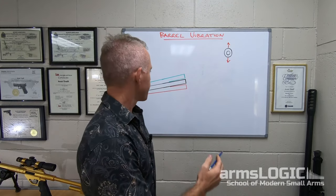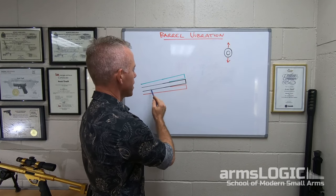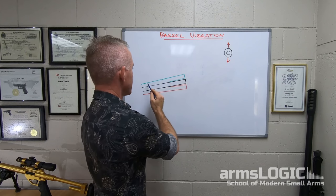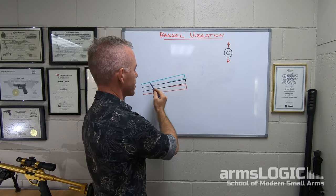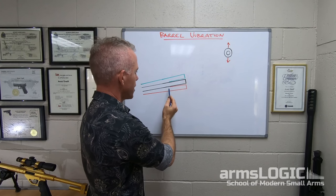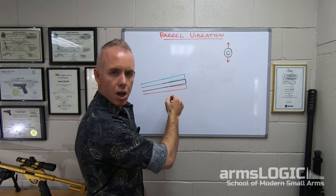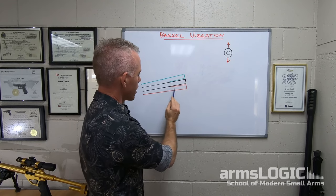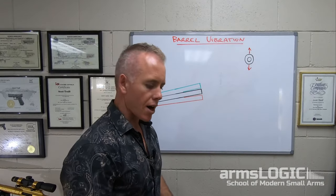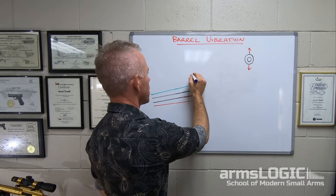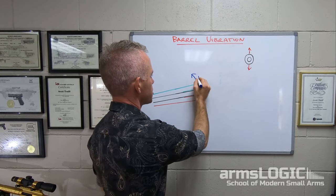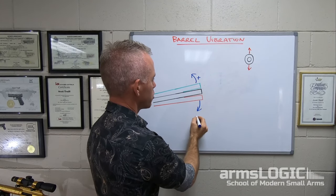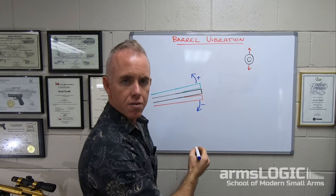With this in mind, here's a barrel shown in black at its mid plane position of vibration. In green is the upwards travel — the upper position of vibration — and in red is the lower position of vibration. So mid plane, upper plane, and lower plane in red. The upwards travel of vibration we will call positive vibration, and the downwards travel of vibration we will call negative vibration.